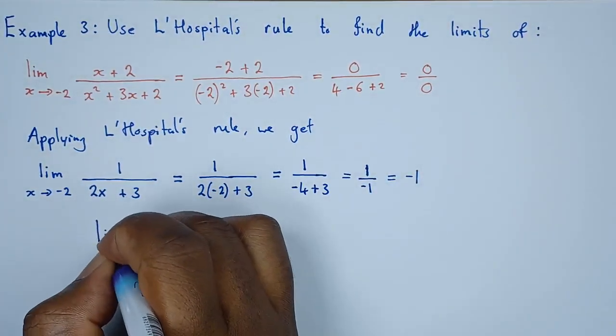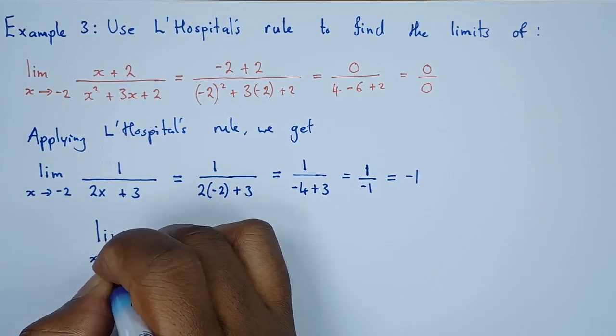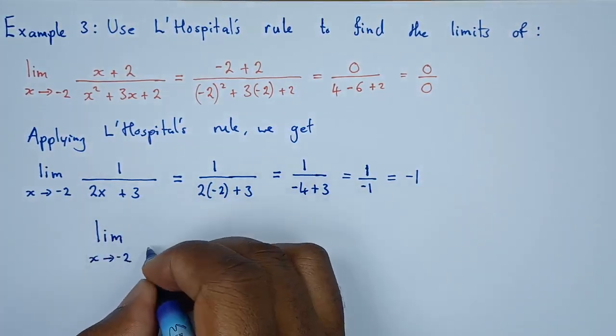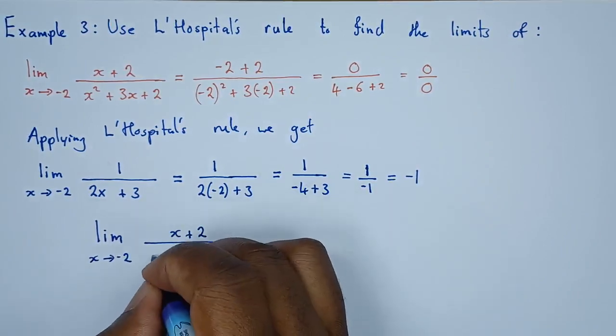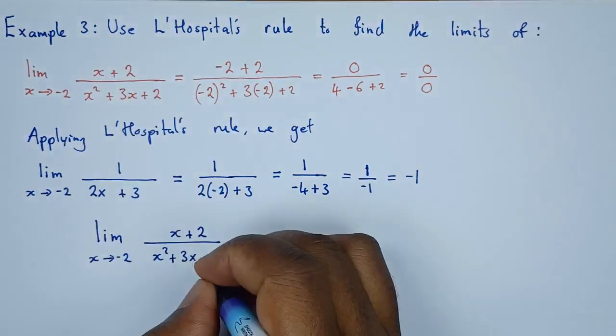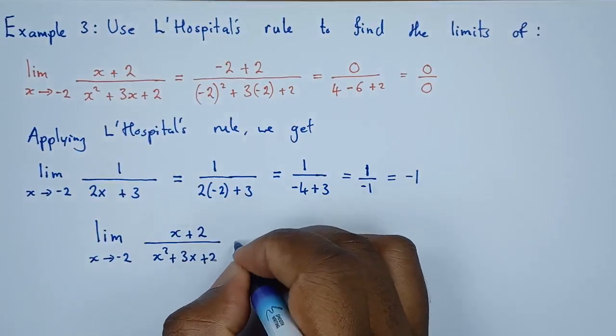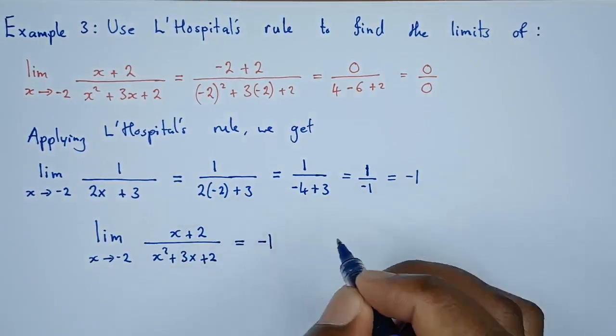So the limit as x approaches negative 2 of x plus 2 divided by x squared plus 3x plus 2, this is just the original function, is equal to negative 1.